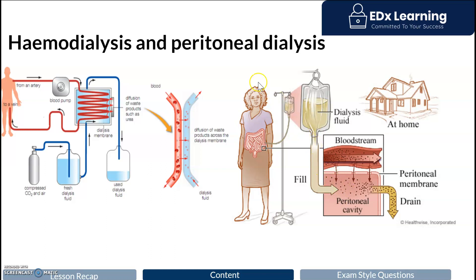Overnight, while the individual sleeps, beneficial ions and glucose will diffuse passively into the circulation. At the same time, waste products such as urea will also diffuse into the peritoneal cavity along their concentration gradient. The next day, all this fluid is drained, and hence the function of the kidney — filtration — has been correctly replaced.